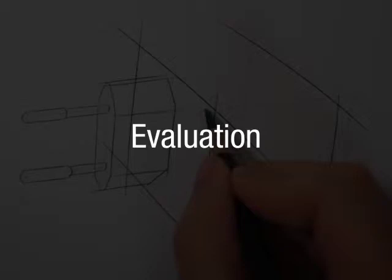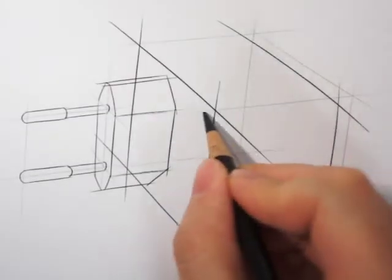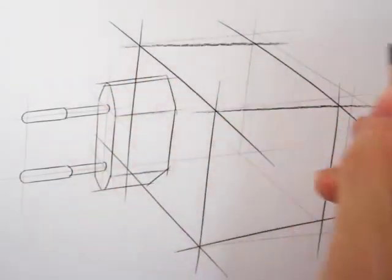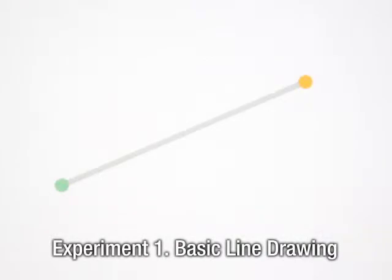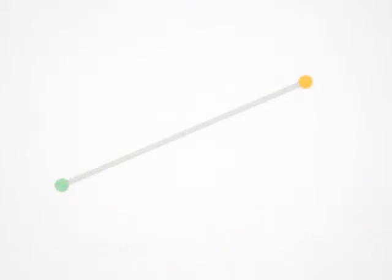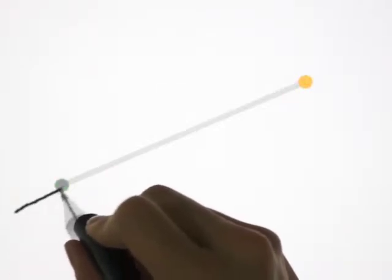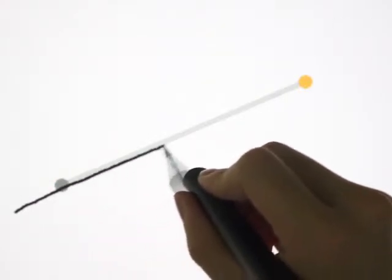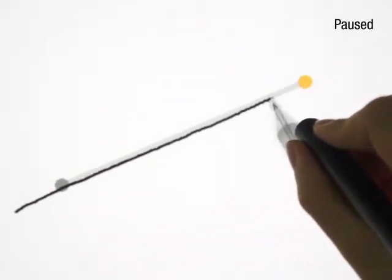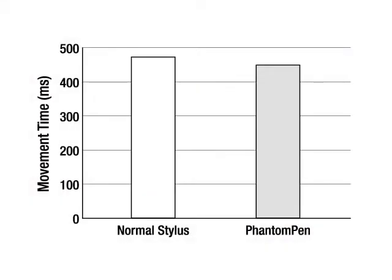In order to evaluate the Phantom Pen concept, we designed three experiments that simulate natural drawing. The first experiment was the most basic but important: linear line drawing. We measured the time taken to successfully connect green and orange targets for Phantom Pen and normal stylus. Subjects smoothly land the stylus before the first point and start to draw. When the stylus touches the first point, it turns gray. Subjects continue to draw a straight line along the guideline, hit the second point, and take off a short while after passing through it. Phantom Pen showed reliable performance in basic line drawing, being slightly faster than a normal stylus.